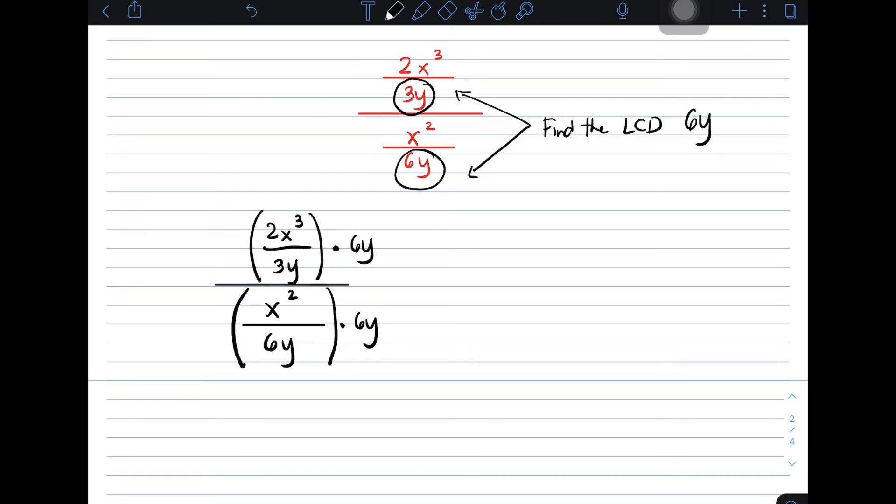So, when we multiply this, we can cancel the y, the y. Same with 6 and 3. This becomes 2 only. Are you following? And then, in your denominator, we cancel the 6y, because they are the same, 6y.